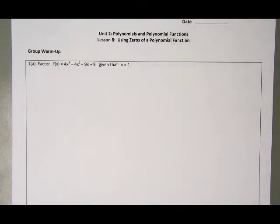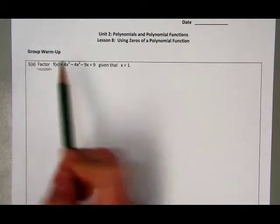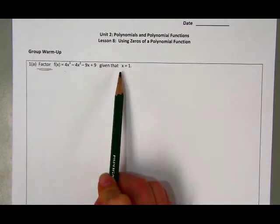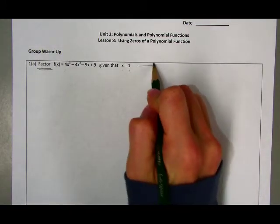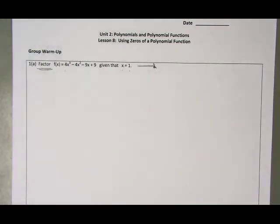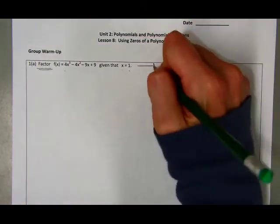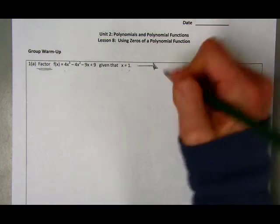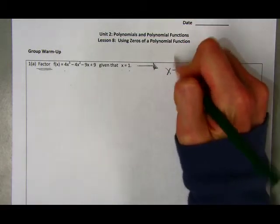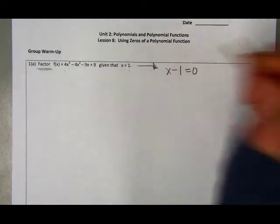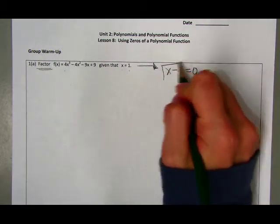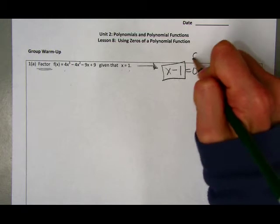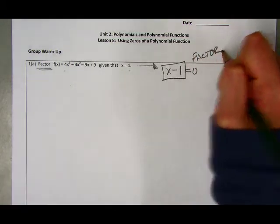In letter 1A, they're asking you to factor this cubic function given that x equals 1 is a zero. The first thing we should do is take x equals 1 as a zero and find its factor. Before it was x equals 1 as a zero, we had x minus 1 equals 0 first. Since we had x minus 1 equals 0 first, the x minus 1 part is what we call our first factor.